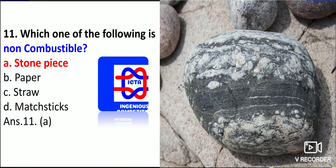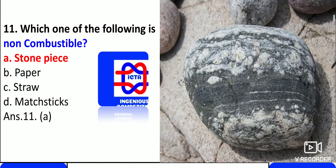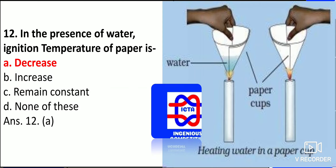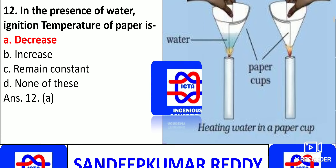Which one of the following is non-combustible? Paper, straw, and matchsticks are all combustible, but a stone piece is non-combustible. In the presence of water, the ignition temperature of paper decreases automatically. If you pour water on paper and then apply a flame, the ignition temperature decreases and it takes time to burn. Heating water in a paper cup demonstrates that the ignition temperature of paper decreases.